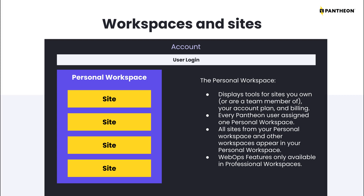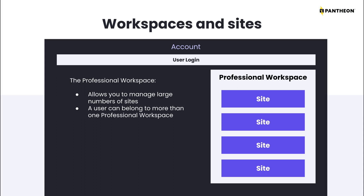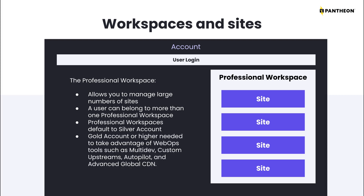WebOps collaboration features such as multi-dev and custom upstreams are not available in personal workspaces. To access these features, you will need a professional workspace. The professional workspace brings together users and sites to allow administrators to effectively manage a larger number of sites. You may be a member of more than one professional workspace and can switch between your personal and professional workspaces, or between different professional workspaces, on your dashboard at any time. When you first create a professional workspace, it is created with a silver account plan, which gives you access to just the basic capabilities of the Pantheon platform. To take advantage of features such as multi-dev, custom upstreams, and autopilot, you'll want to upgrade the workspace to a gold plan.